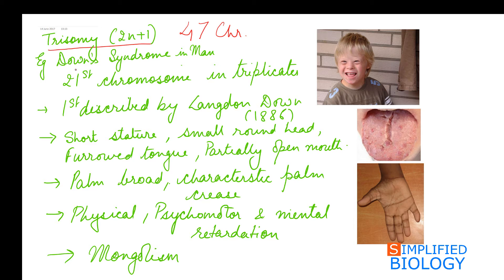An example of trisomy is Down syndrome in humans, in which the 21st chromosome is present in triplicates. Down syndrome was first described by Langdon Down in 1866, which is why it bears his name.